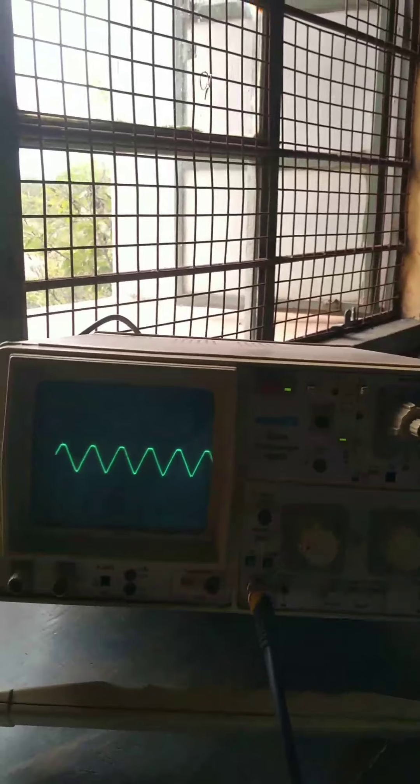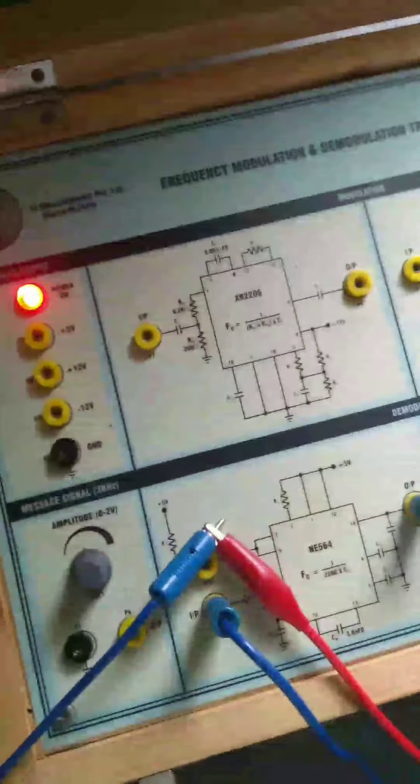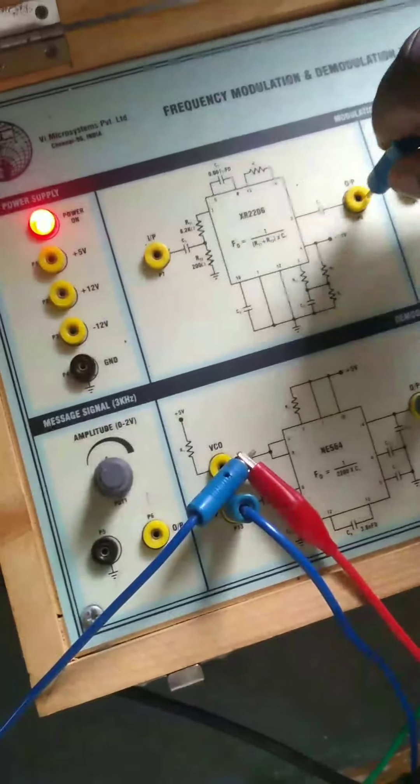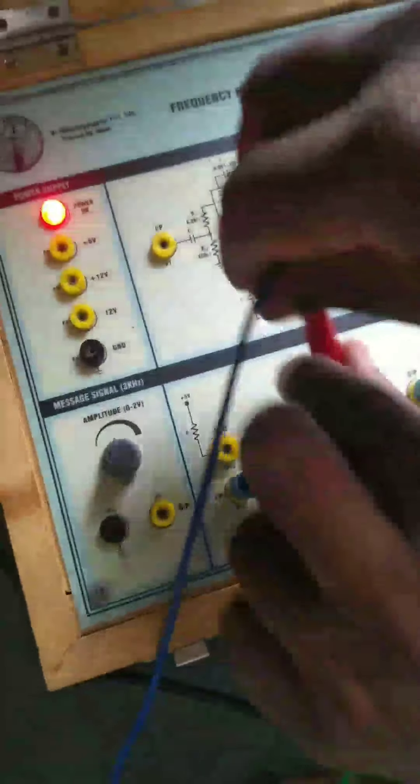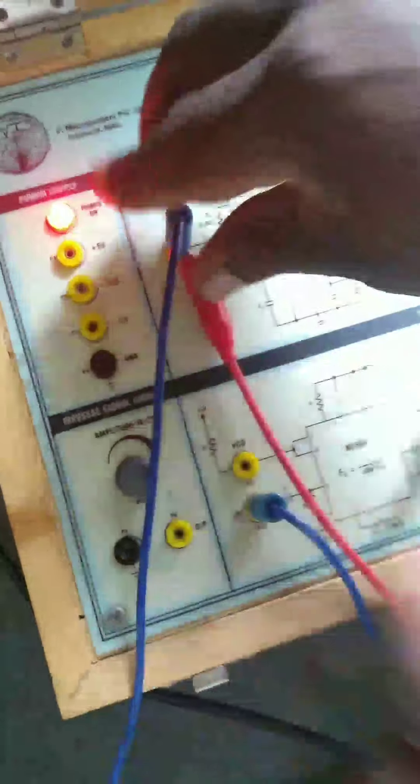Carrier is 18 microseconds. That is the FM. Carrier and modulating signal mix together to form FM.